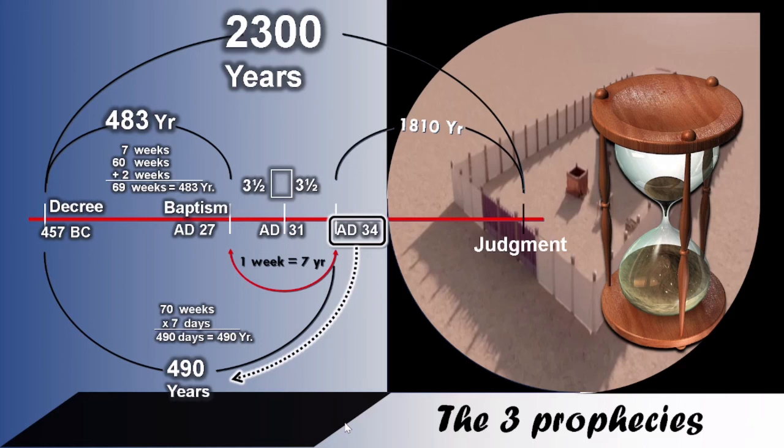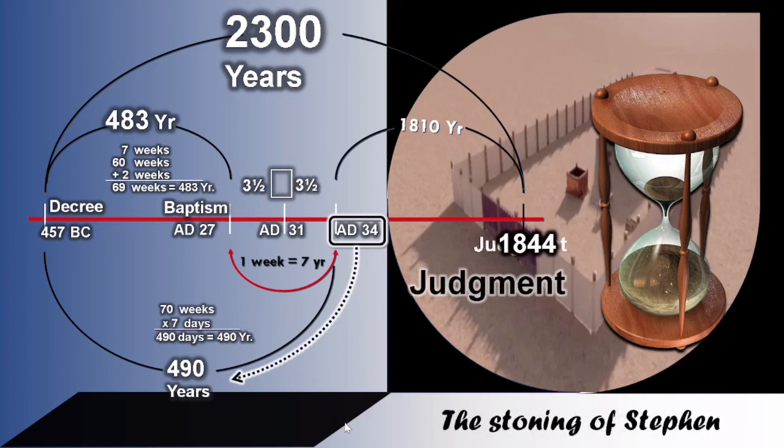And then here is what I want us to listen to so much. When we get AD 34 where we see that the end of the 490 years ended, and then we add on our remaining part, that is the last part of the 2300 days, and that is 1810, you come to 1844. And 1844, dear friend, judgment begins. When judgment begins, it does not begin with those that are outside. But we see that judgment begins in the house of the Lord.